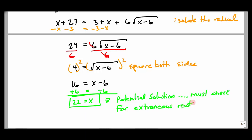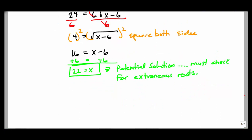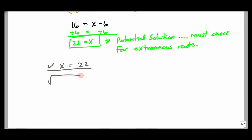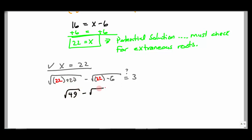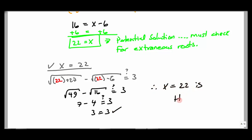We already know from our graph it's a good solution, but let's check by hand. Checking x = 22: plugging into the original — 22 + 27 = 49, so square root of 49; and 22 − 6 = 16, so square root of 16. Does √49 − √16 = 3? Square root of 49 is 7, square root of 16 is 4. 7 − 4 = 3. Yes, this checks. Therefore x = 22 is the solution.